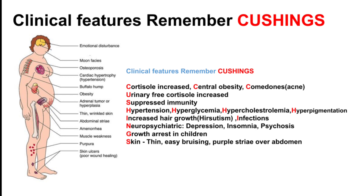U is for urinary free cortisol, which will be increased. S is for suppressed immunity. H gives you four things: hypertension, hyperglycemia, hypercholesterolemia, and hyperpigmentation.